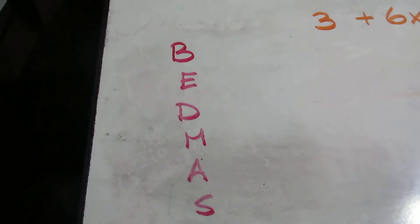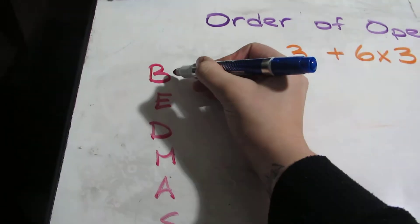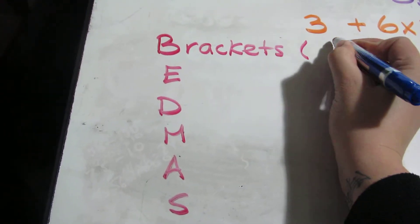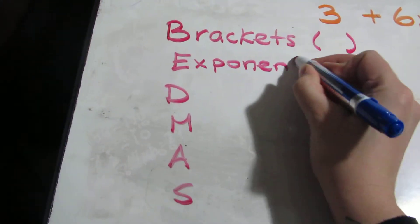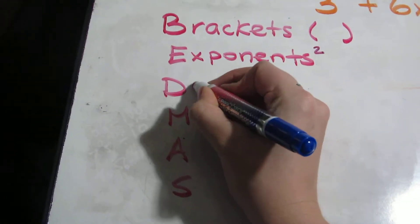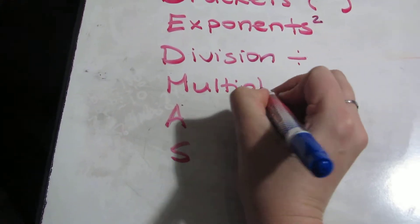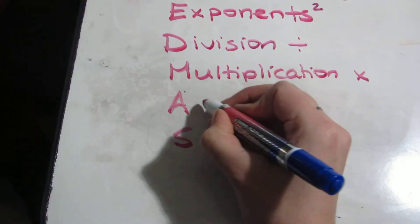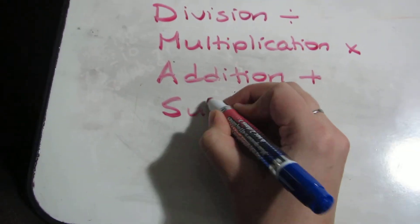Each of these letters stands for the order in which we do the operations. B stands for Brackets, E for Exponents (that's the power, the little number, remember), D for Division, M for Multiplication, A for Addition, and S for Subtraction.